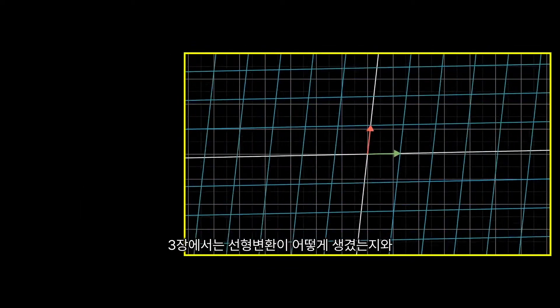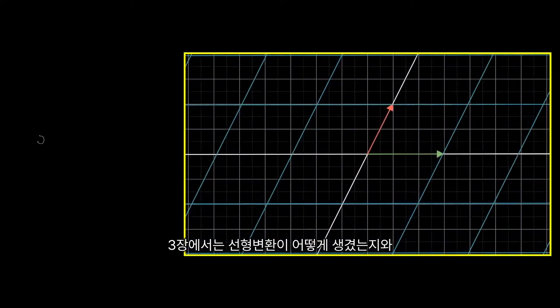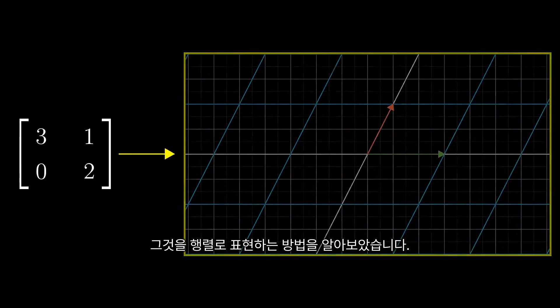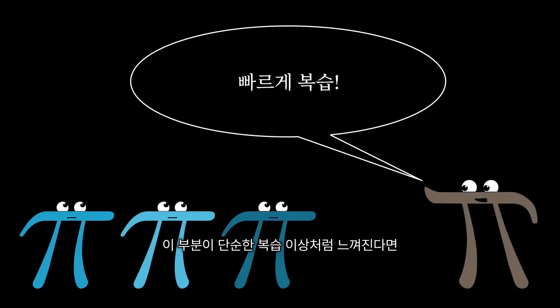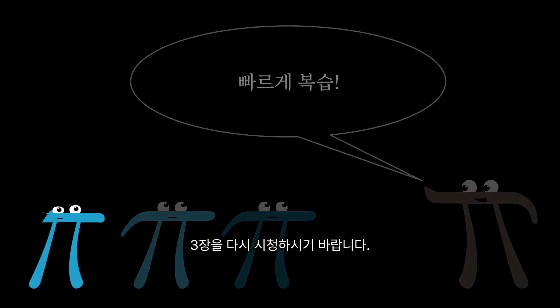Hey everyone. Where we last left off, I showed what linear transformations look like and how to represent them using matrices. This is worth a quick recap because it's just really important, but of course if this feels like more than just a recap, go back and watch the full video.